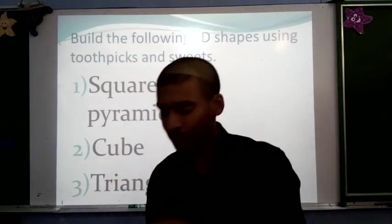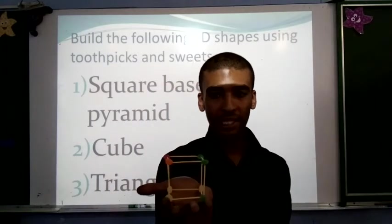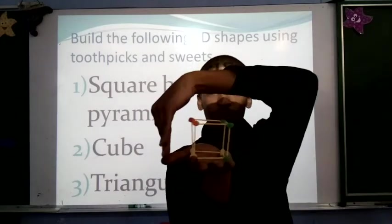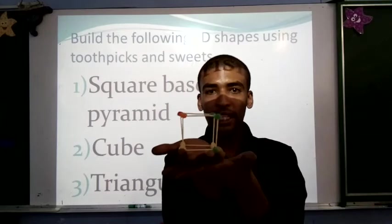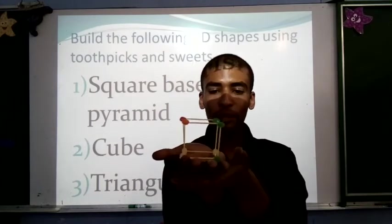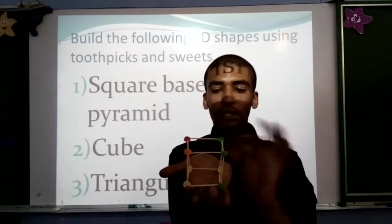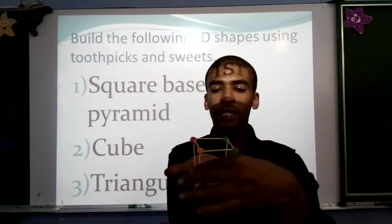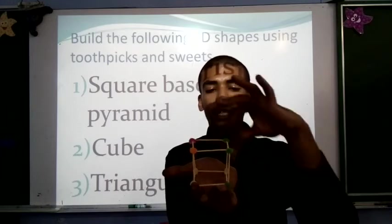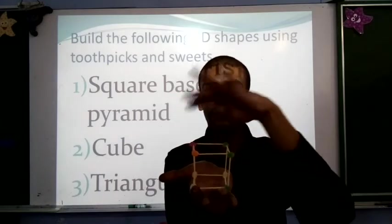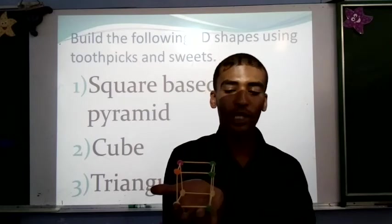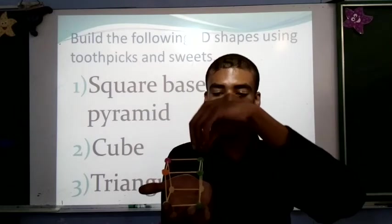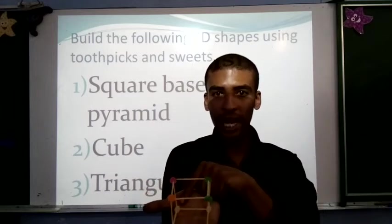We can do the same with our cube. How many faces does it have? We have 1, 2, 3, 4, 5, and 6 at the bottom. How many toothpicks, starting at the bottom? 1, 2, 3, 4, going up, 5, 6, 7, 8, 9, 10, 11, 12. And finally, our jelly tots, or as we like to call them, our vertices. We have 1, 2, 3, 4, 5, 6, 7, 8.